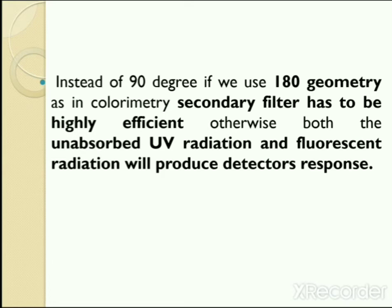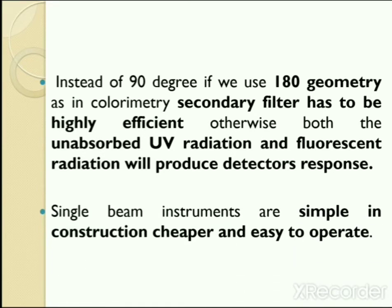Single beam instruments are usually 90 degree instruments. They are so called because in these instruments light travels from the light source to the detector at a 90 degree angle. If 180 degree geometry is used, then the secondary filter has to be highly efficient, otherwise both the unabsorbed ultraviolet radiation and fluorescent radiation will produce a detector response. Single beam instruments are simple in construction, they are cheaper and easy to operate.